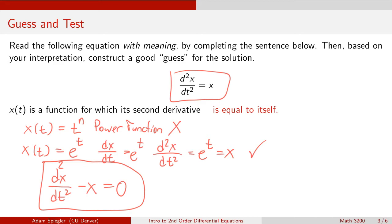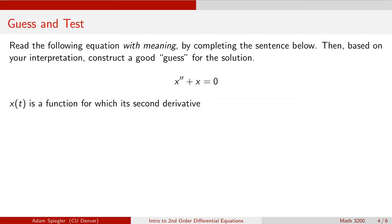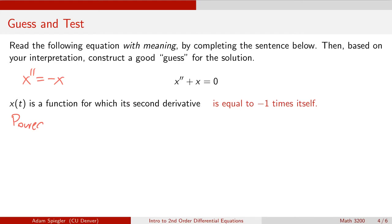Here is a very similar looking equation: x'' + x = 0. We can rearrange this to read x'' = −x, meaning we want a function whose second derivative gives minus one times itself. Power functions won't work because when we take derivatives of power functions, the power drops and we get totally different-looking things. So power functions aren't going to work.